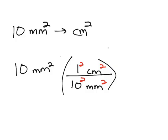So in my calculator, I'm doing 10 divided by 10 squared, and I should end up getting 0.1 centimeters squared.